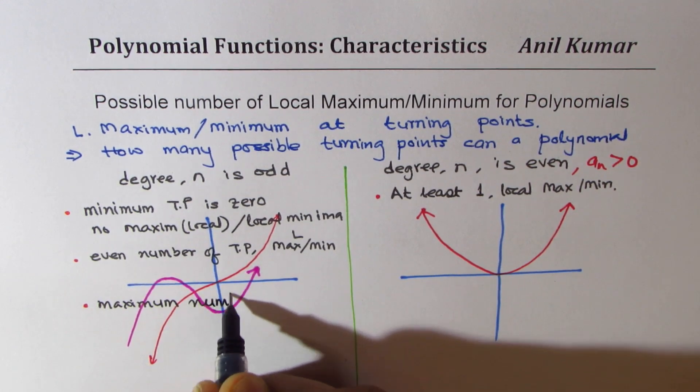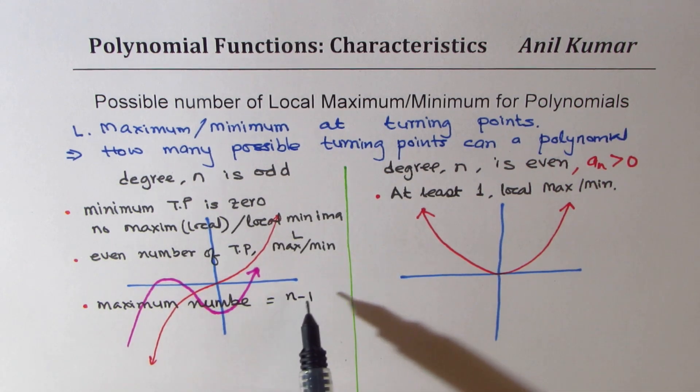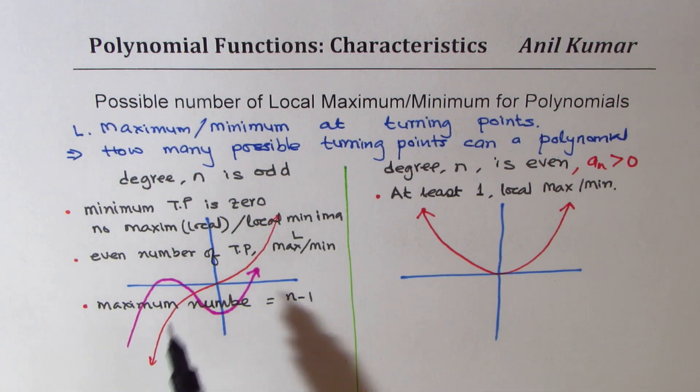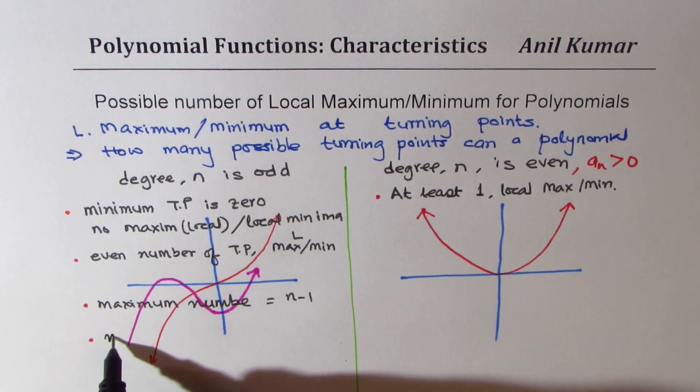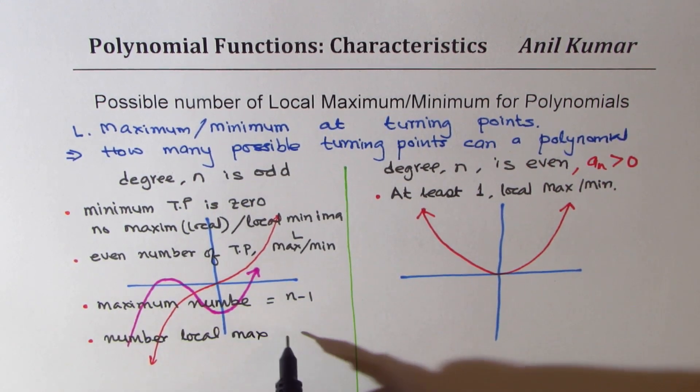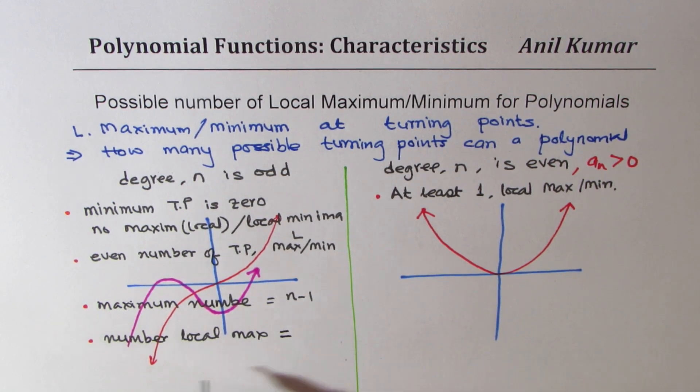So if n is 7, for example, we could have maximum six local maximum and local minimum. Half of them will be maximum. Half of them will be minimum. Another important thing to note here is that number of local maximum will be equal to local minimums. Number of local maximum and minimum will be exactly same. Do you see that part?